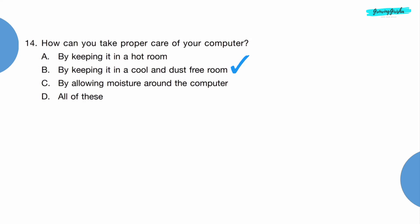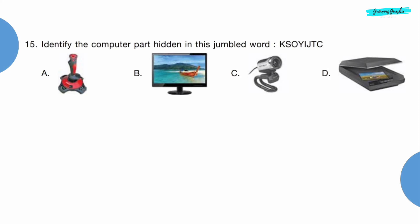Question 14: How can you take proper care of your computer? Option B, by keeping it in a cool and dust-free room. Question 15: Identify the computer part hidden in this jumbled word: K S O Y I J T C. On unscrambling the jumbled word we get joystick, which is in option A.